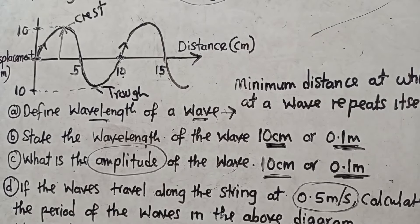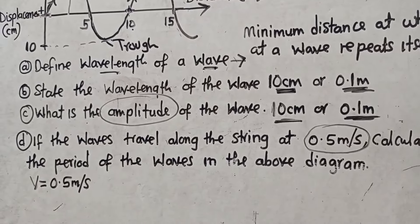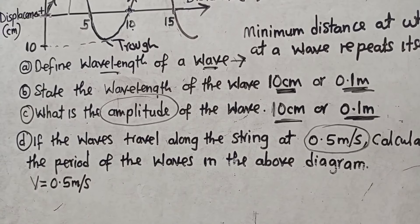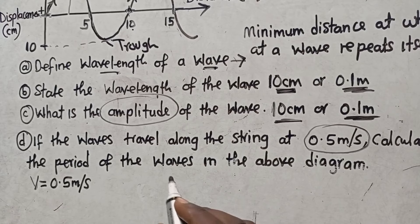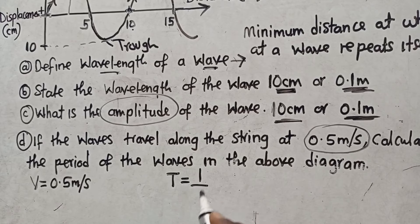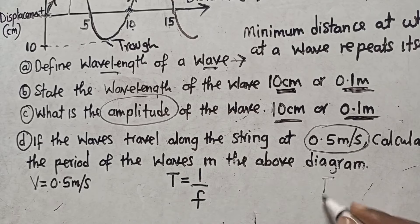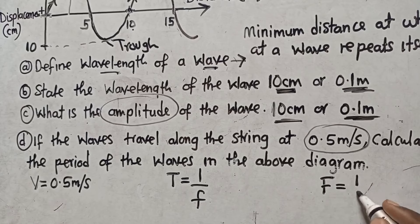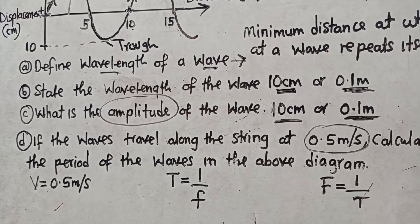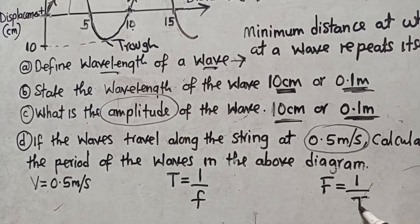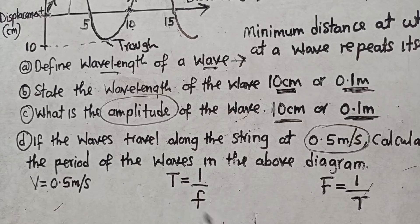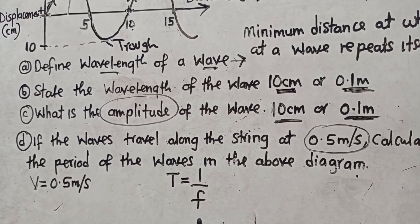Calculate the period of the waves in the above diagram. So they want us to calculate the period. How can we now calculate the period? For us to calculate the period, you know and understand that period and frequency, this period is inversely proportional to period. So it means that even period is inversely proportional to frequency, 1 over frequency. This is the formula. That's why we say frequency is equal to 1 over period. But if you make this one the subject of the formula you are going to come up with this.